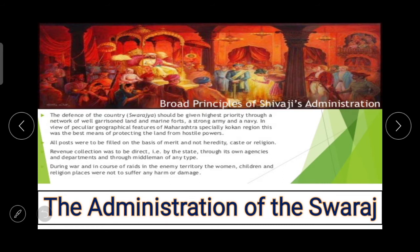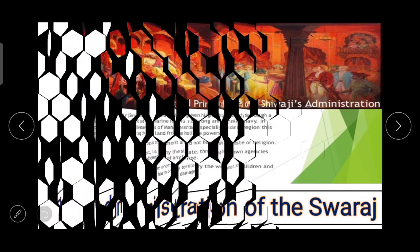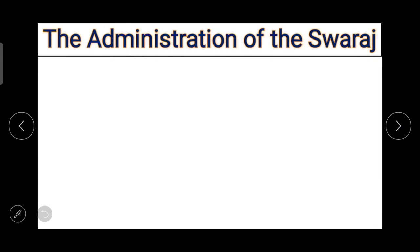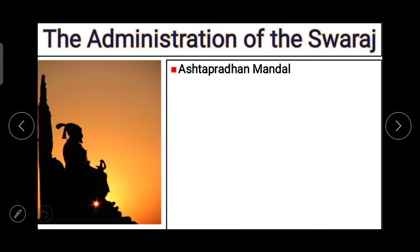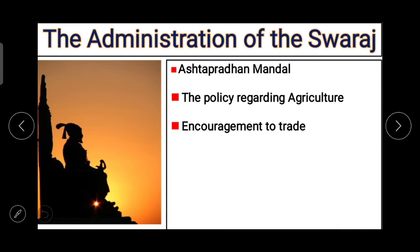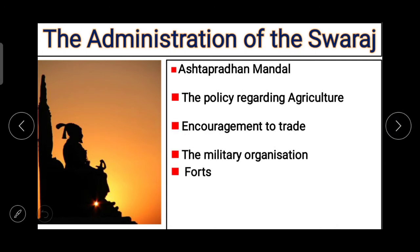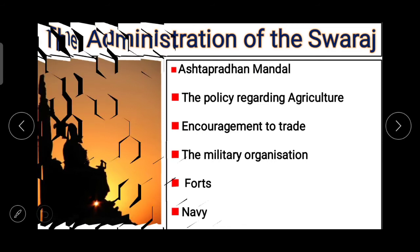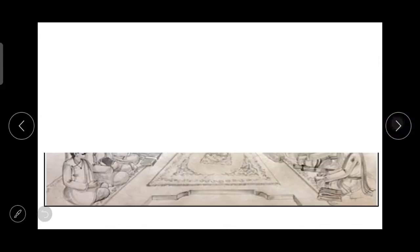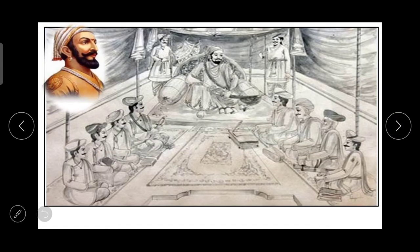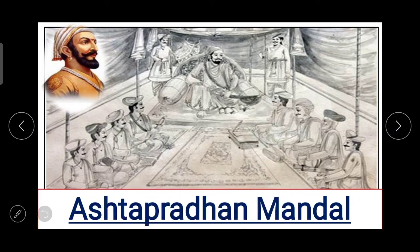In this topic we shall get information about the administration of the Swaraj. The points to cover are: Astapradhan Mandal, the policy regarding agriculture, encouragement to trade, the military organization, forts, and navy. The first one we are going to talk about is the Astapradhan Mandal, or council of eight ministers.